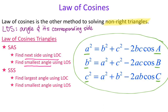The other type of triangle is the side-side-side triangle. From there, you start by finding the largest angle using law of cosines, and then find the smallest angle using law of sines.